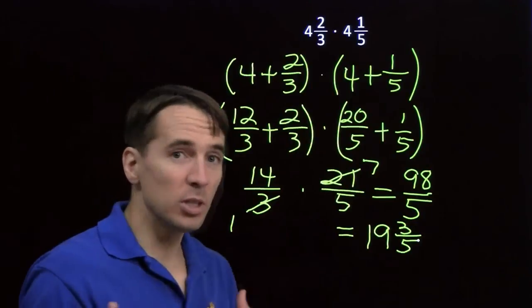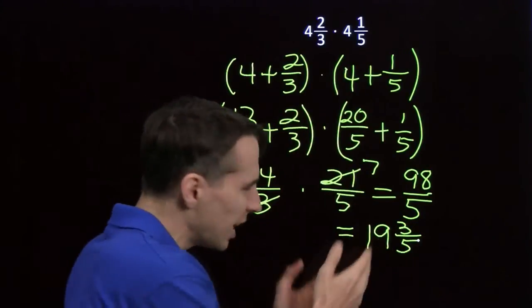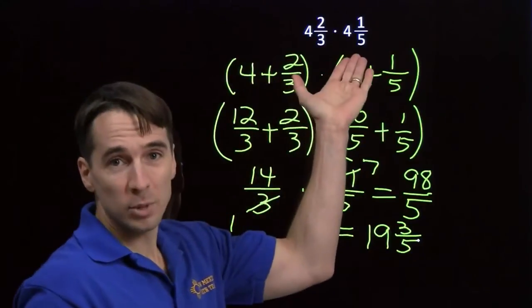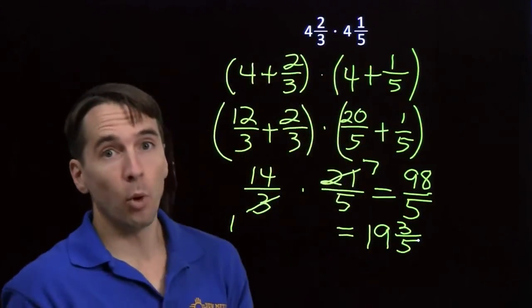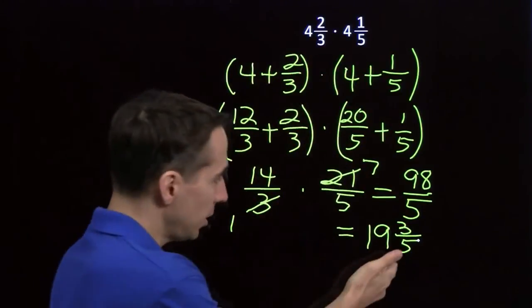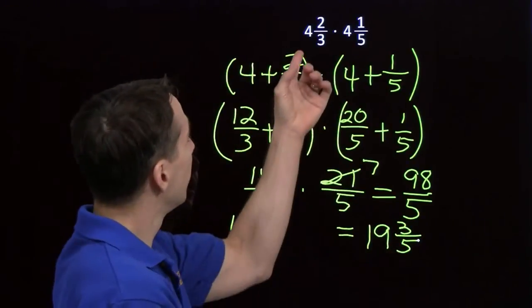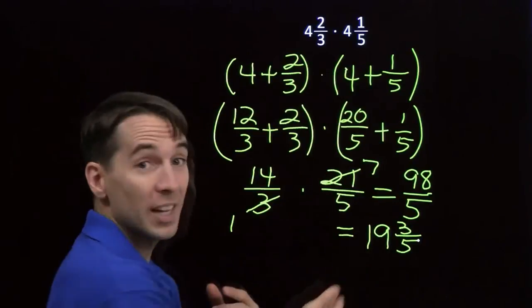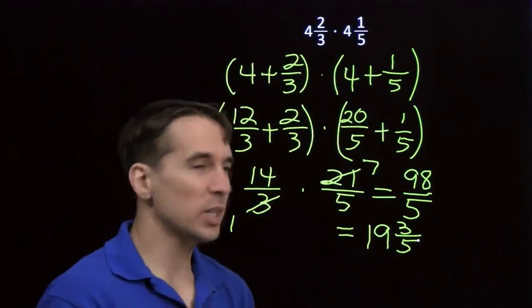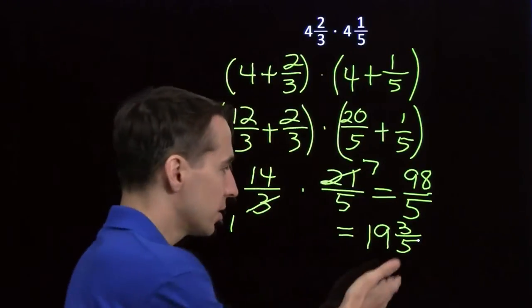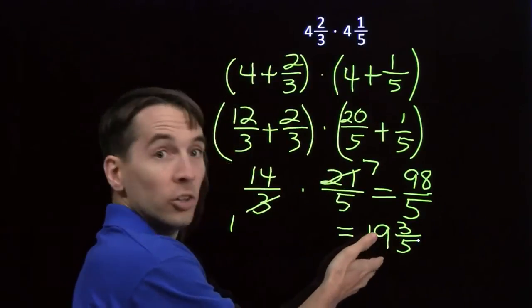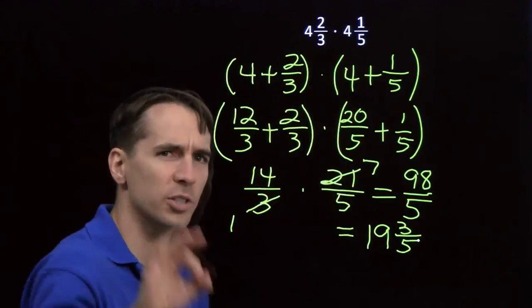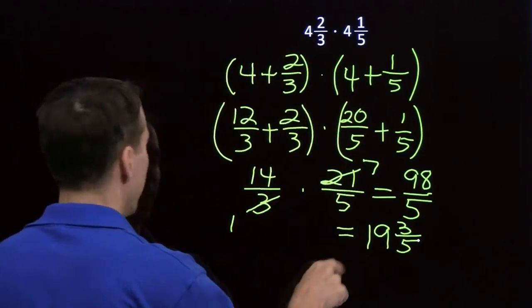Now, at the end of these types of problems, I usually like to do a little sanity check and make sure our answer kind of makes sense. Up here, we look at 4⅔ times 4⅕. That's going to be more than 4 times 4, which is 16. Sure enough, that's more than 16. And this is going to be less than 5 times 5, which is 25. Sure enough, that's less than 25. This quick check helps us avoid huge mistakes. You know, if we'd come out to an answer of like 12⅗, we'd know immediately we were wrong, because 12⅗ is less than 4 times 4. So sanity checking is a good thing.